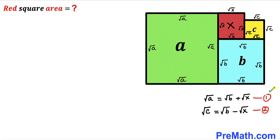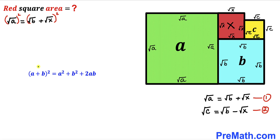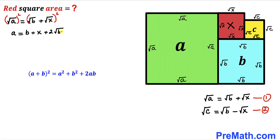Now let's focus on equation one: √a = √b + √x. We square both sides to undo the square roots, applying the identity (p + q)² = p² + q² + 2pq to the right-hand side. This gives us: a = b + x + 2√(bx). We label this as equation number three.